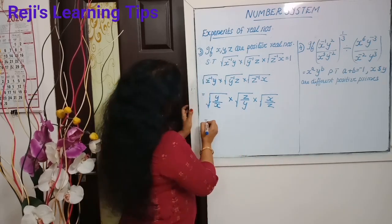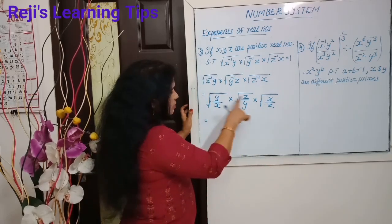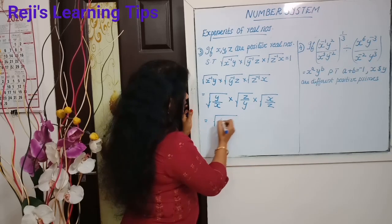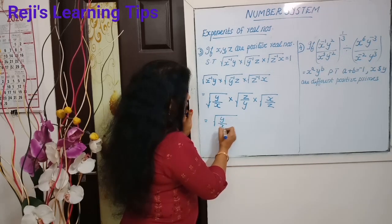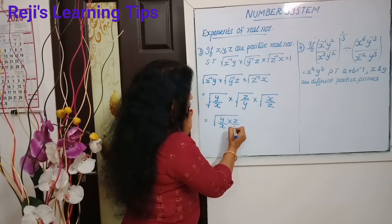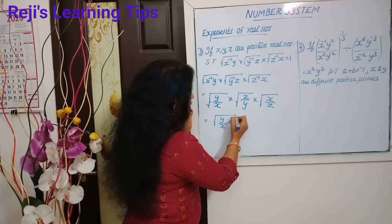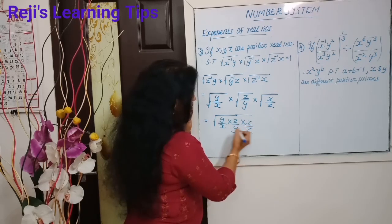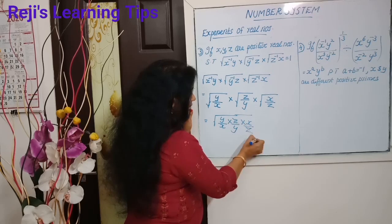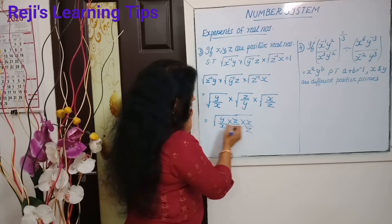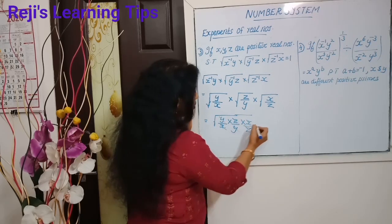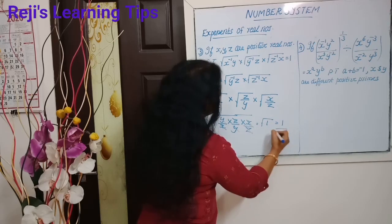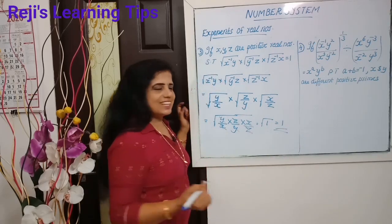Then we can cancel these z and z, x and x, y and y. Then we will get root of 1, that is equal to 1. Easily.